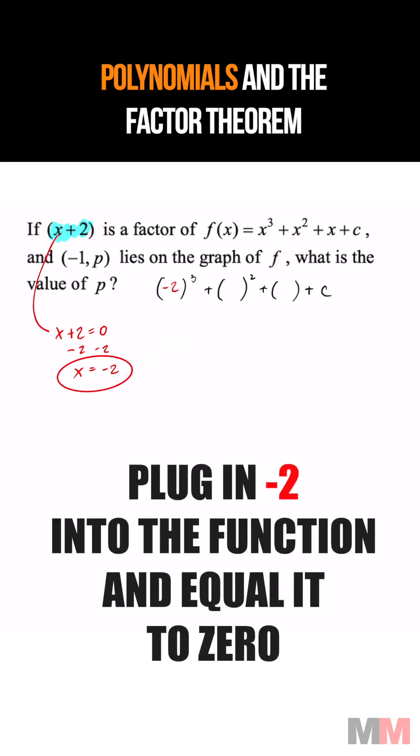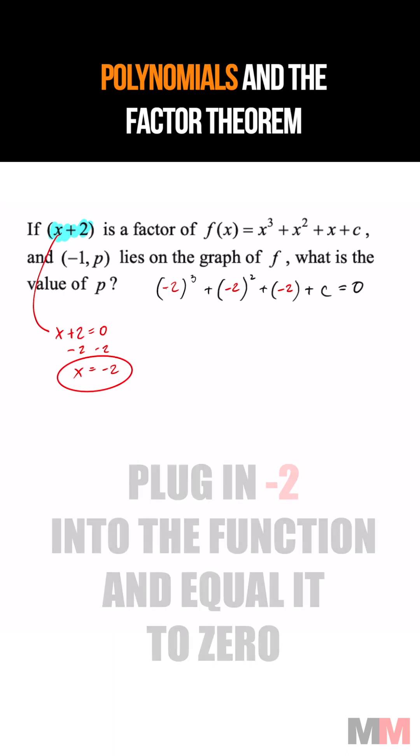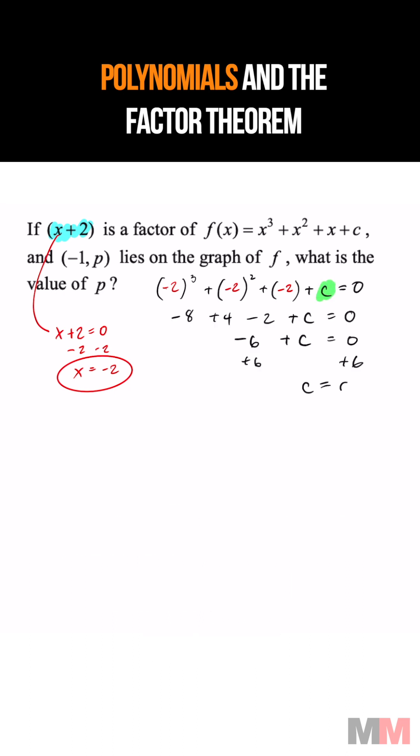I'm going to plug in a negative 2 for my x values, and the output is going to be zero. So we just got to equal that to zero, and that's going to get me my c value, which is going to get me c equals 6.